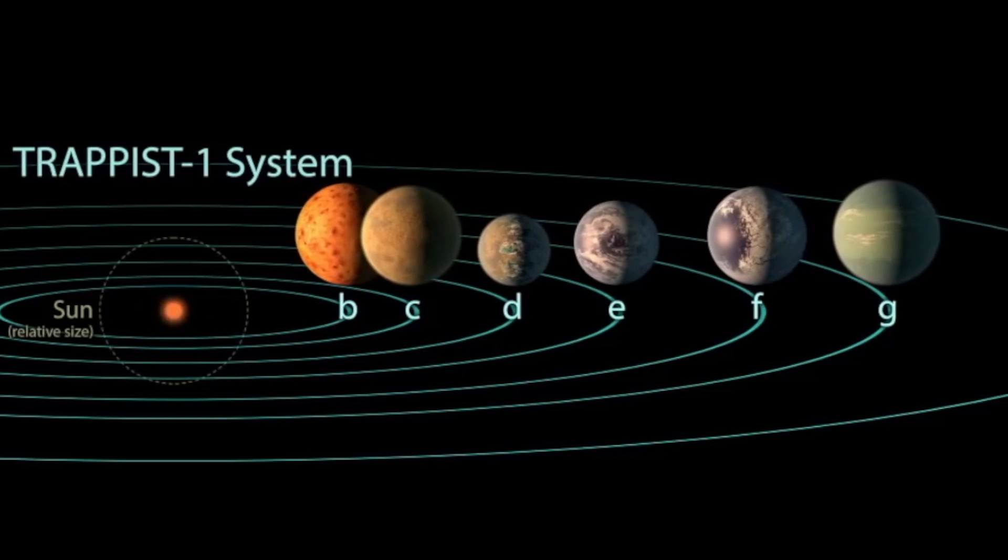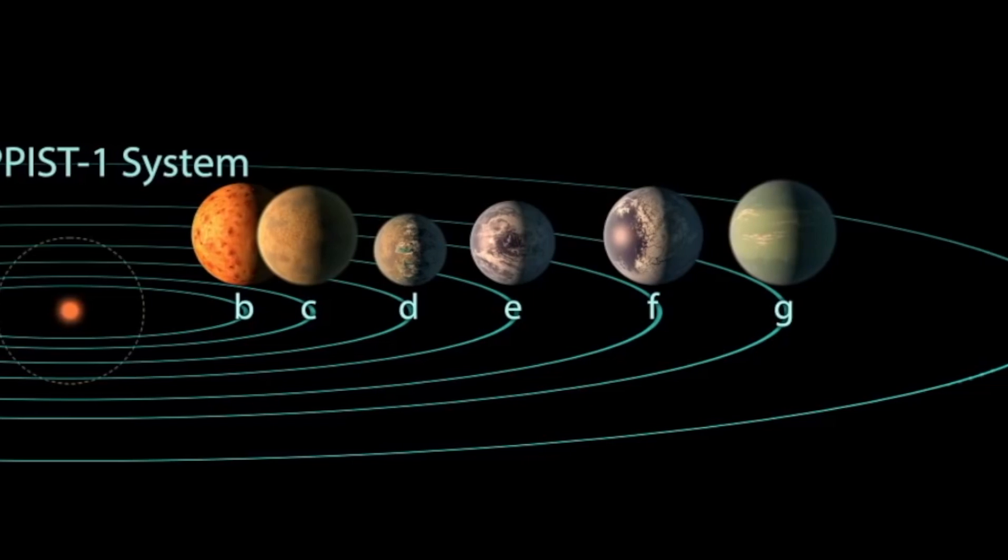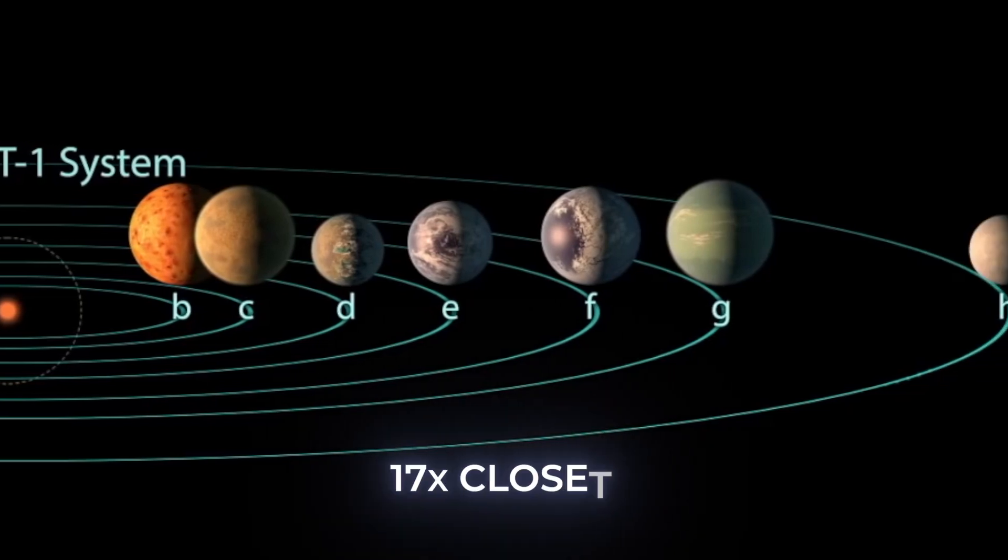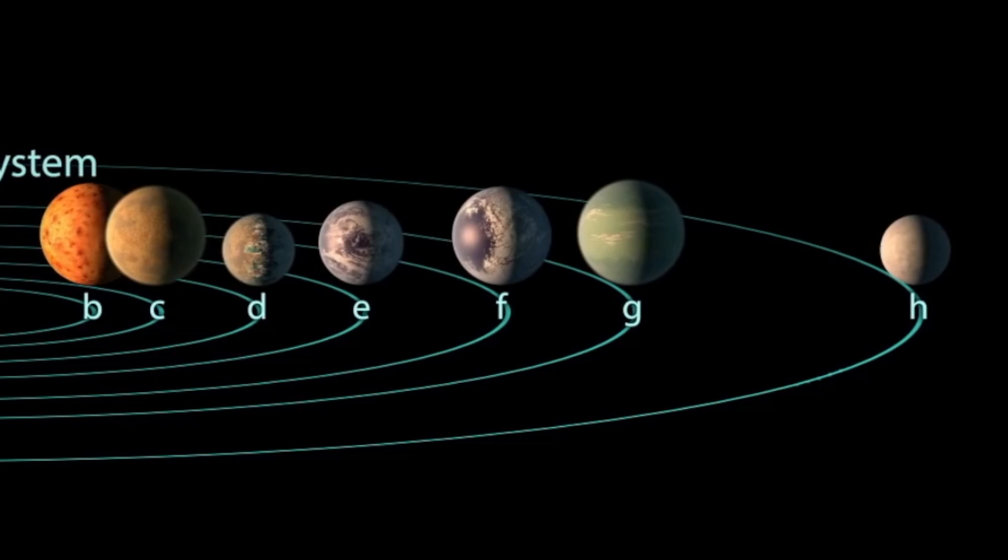Because the Trappist-1 star is so small, the planets orbit much closer in order to stay tethered by the star's gravity. In this system, even the outermost planet's orbit is almost 17 times closer than Earth's is to the sun, and completes one orbit in only 17 days.